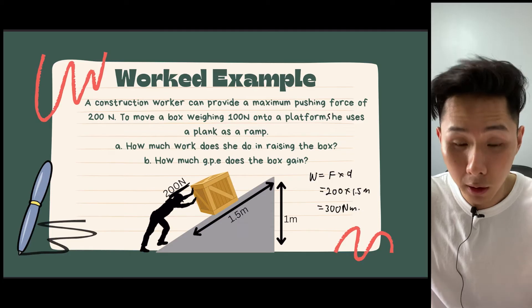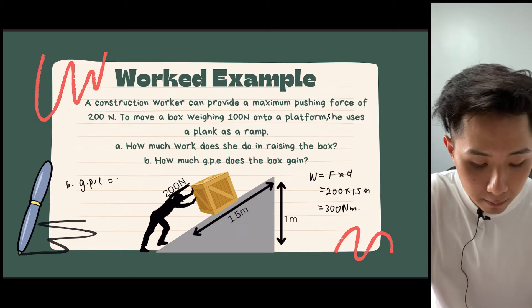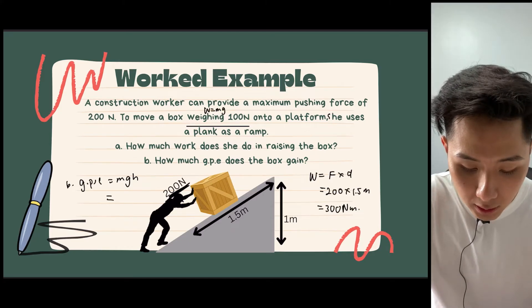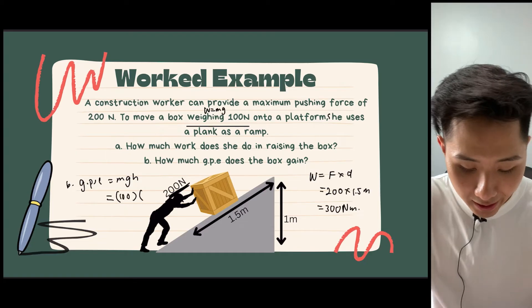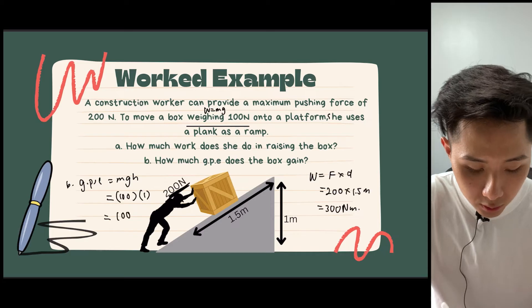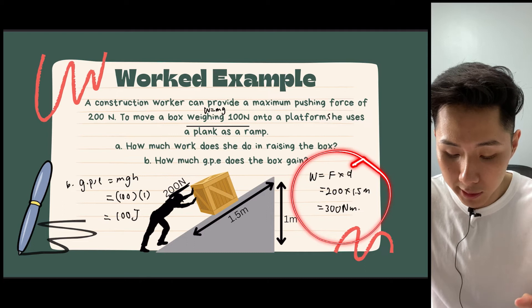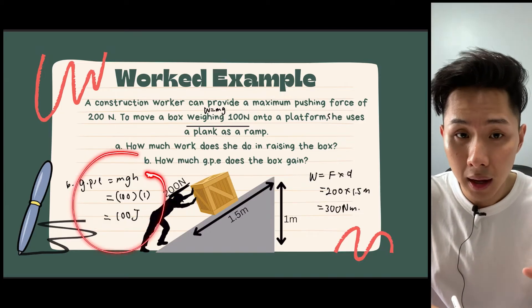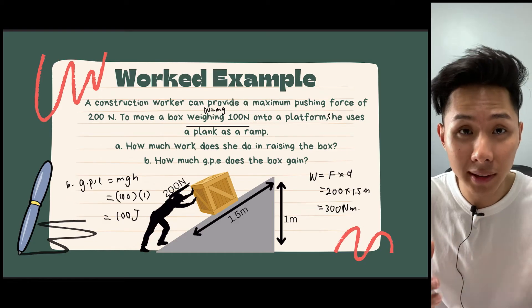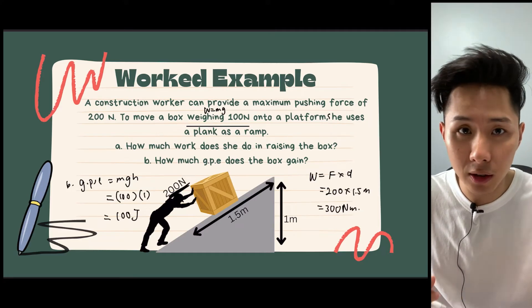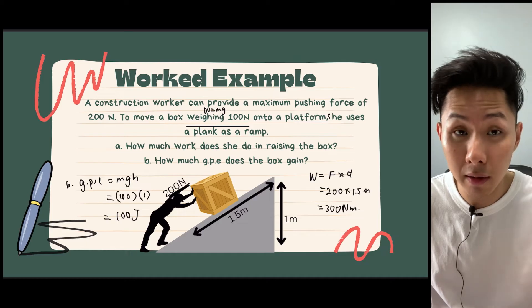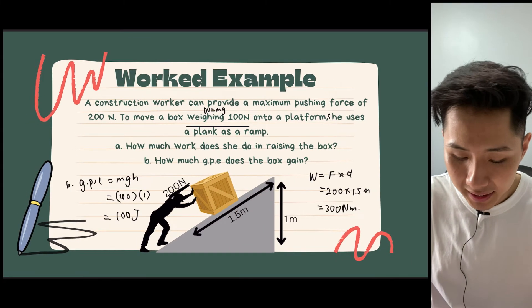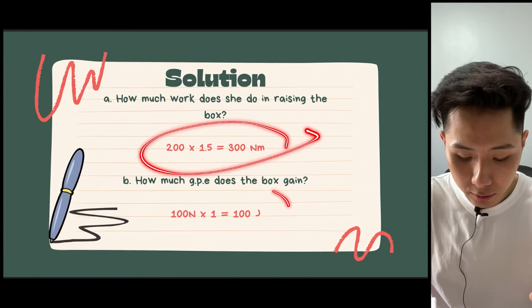Next up, how much GPE does the box gain? We know that we can calculate GPE using the formula MGH. And the box weighs 100 Newton. So weight is equal to Mg. Therefore, for Mg, I can just sub in 100. And the height is 1 meter. And that's 100 joules. So you can see that even though the worker here produces 300 Newton meter of work done, the box only gained a GPE of 100 Joules. So where did the 200 Joules go? And according to the principle of conservation of energy, we know that the energy cannot be destroyed. It just can't go anywhere. So the 200 Joules of energy, as you already know, is that they are lost through either friction or heat as the box travels up.